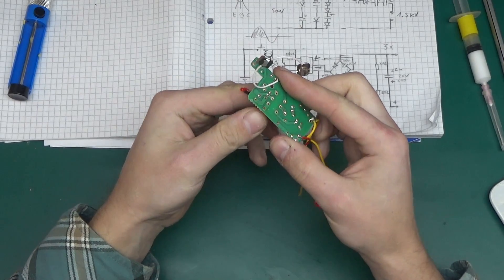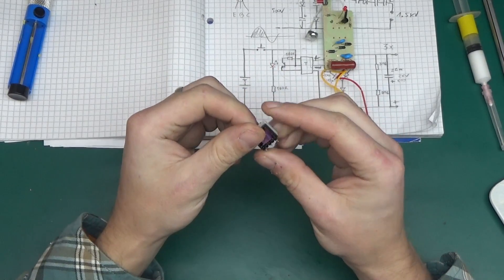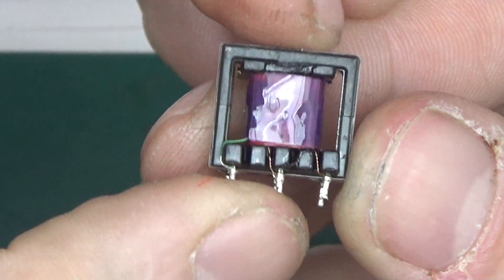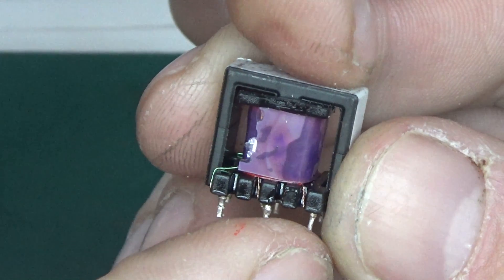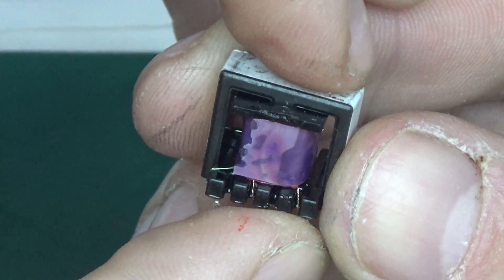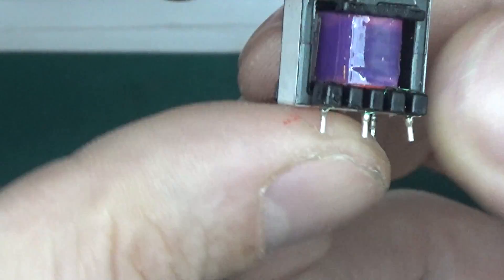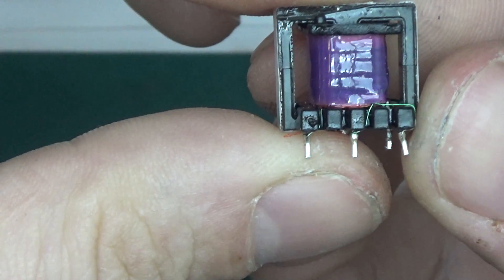Here I've desoldered the transformer and what we see is you can see there's green wire, two just copper wires, and on the other side all three are green.